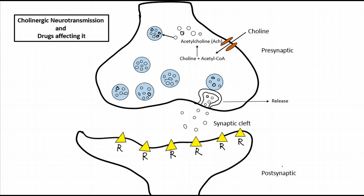The release of acetylcholine neurotransmitter is a very important step because this step is mainly inhibited by a drug called botulinum. Botulinum is a toxin produced by Clostridium bacteria, and it is mainly known to inhibit the release or exocytosis of the acetylcholine neurotransmitter.